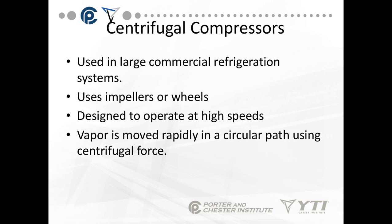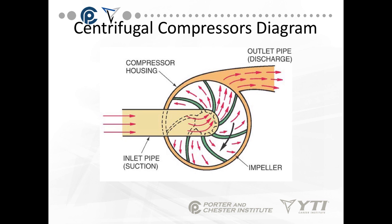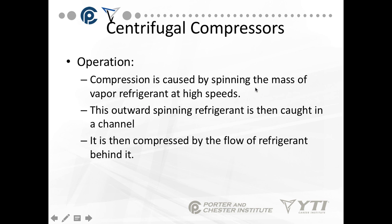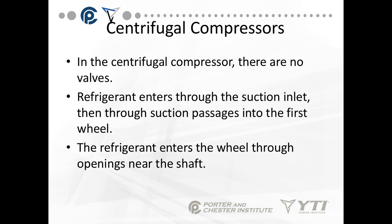Vapors move very rapidly in a circular pattern using centrifugal force. We pull vapor in on the suction line, and as the impeller spins in the compressor housing, it's going to increase the pressure and push it out the outlet pipe or discharge. The compression is caused by spinning the mass of vapor refrigerant at high speeds. The outward-spinning refrigerant is then caught in a channel and compressed by the constant flow of refrigerant behind it.